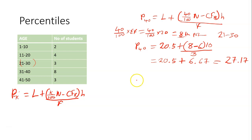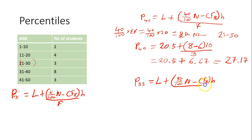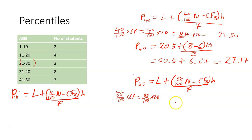Let's say a question asks you to find the 55th percentile. That would be L plus into brackets 55 over 100 N minus CFB times H divided by F. We need to look for the 55th percentile class. To get it, we say 55 over 100 times sigma F, which is 55 over 100 times 20, giving 11 — the 11th position.